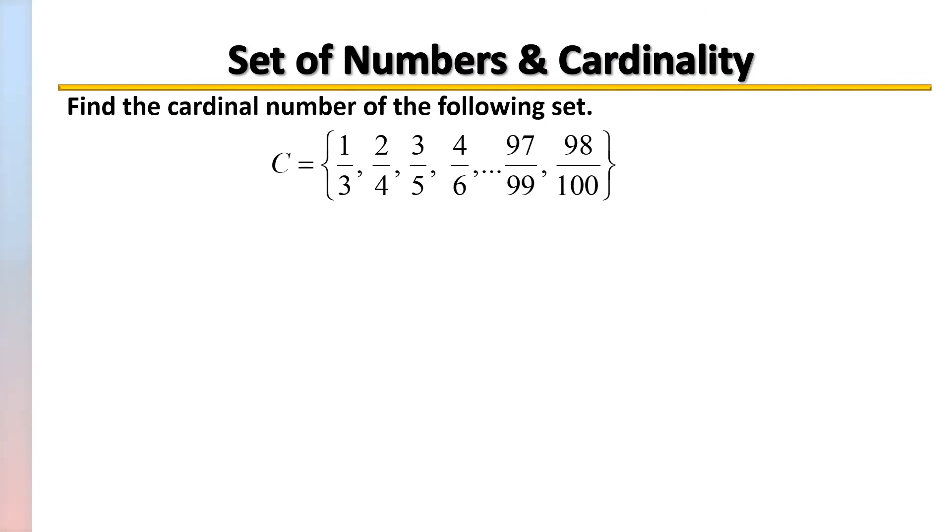Here we're asked to find the cardinal number of this set. And it may look difficult only because you have fractions, but whenever you're given fractions, you want to focus on either the top or the bottom. So let's go ahead and focus on the top since the top seems to be the consecutive numbers. One, two, three, four, which means it's going to go all the way to 98 here. So let's use the top as our source of reference.